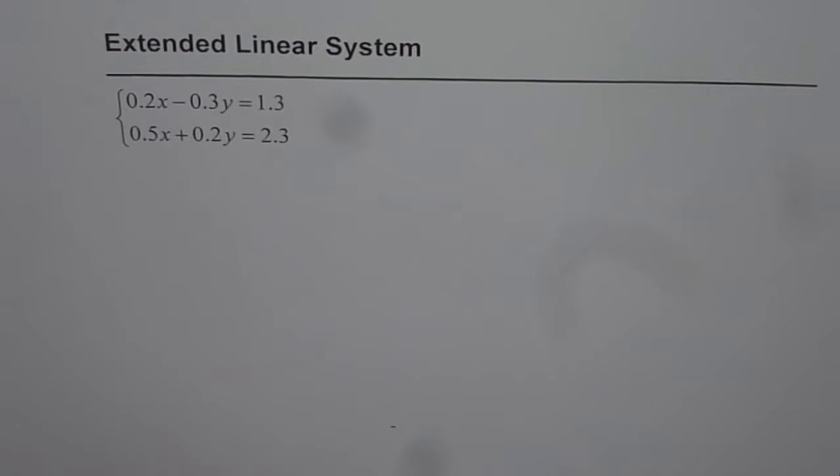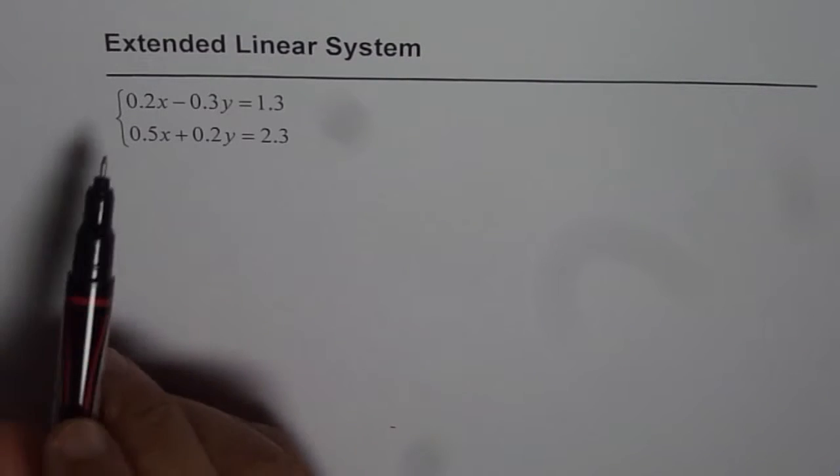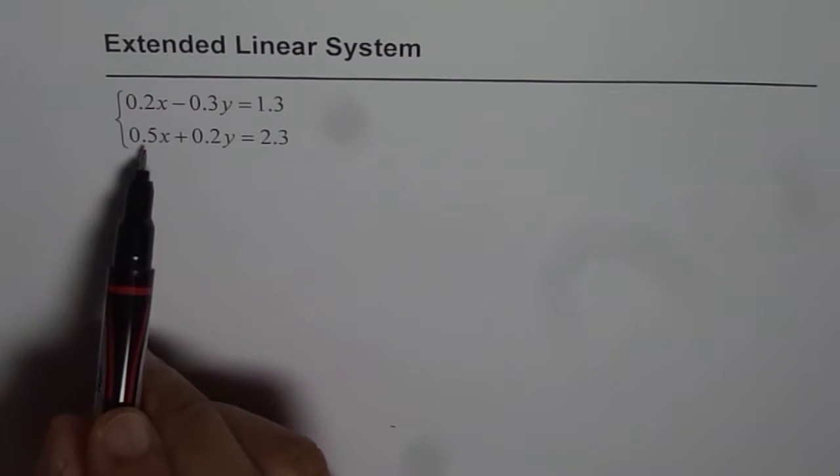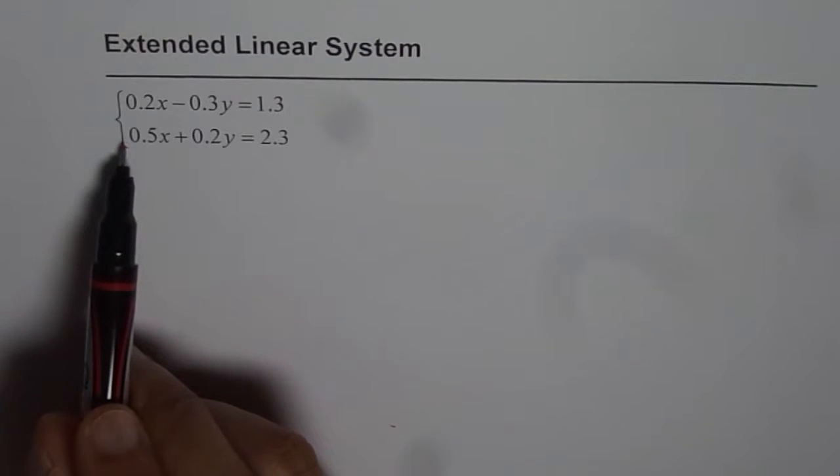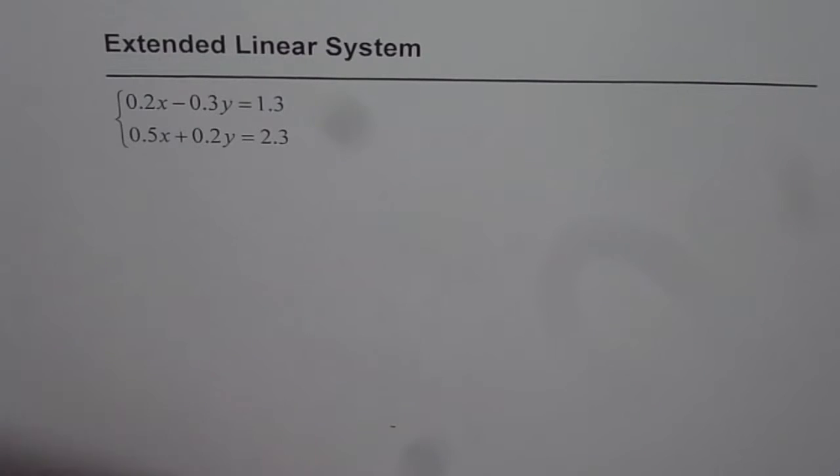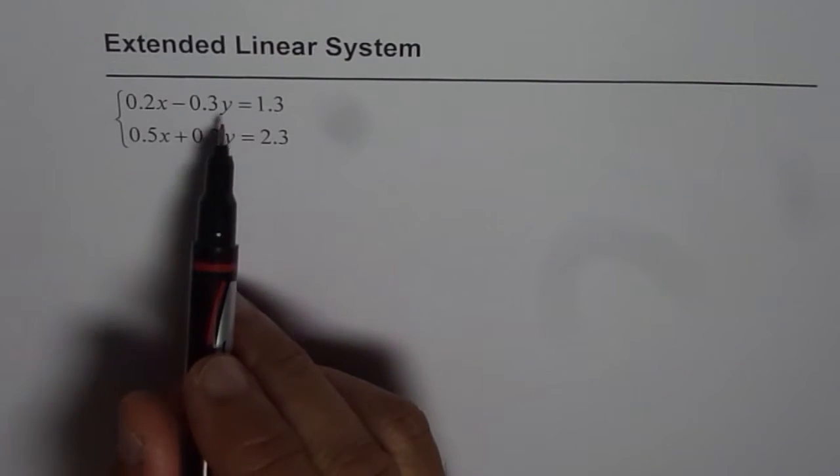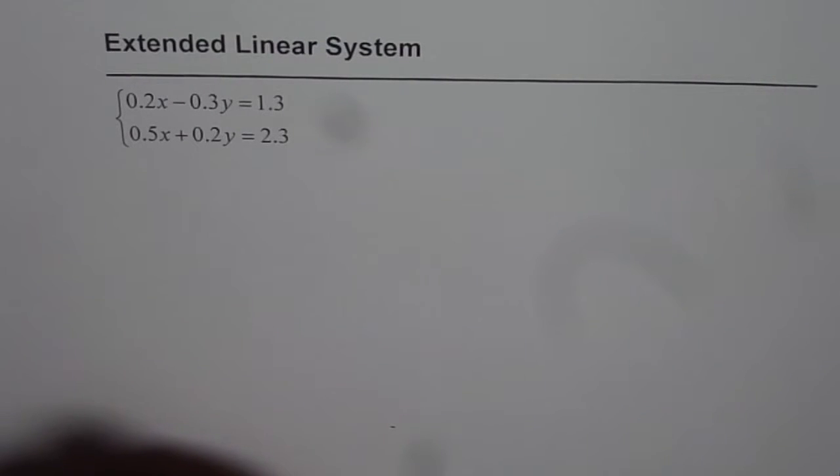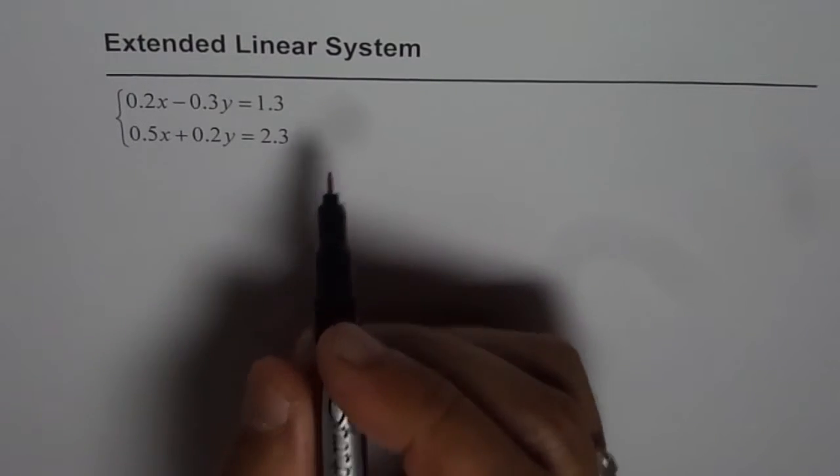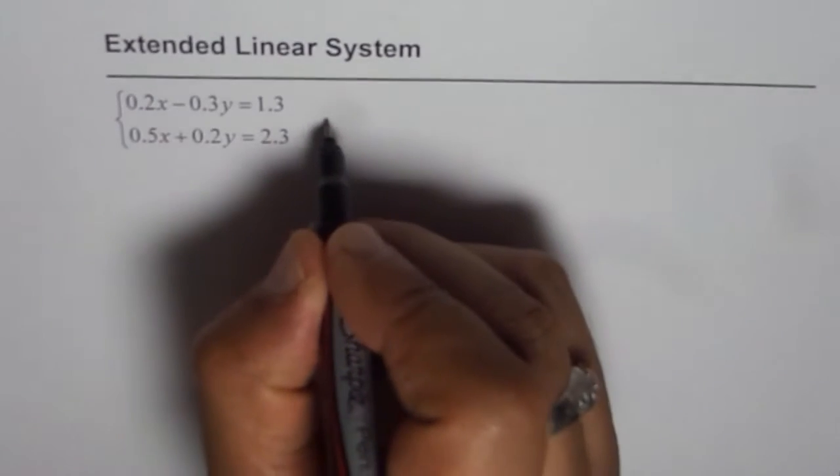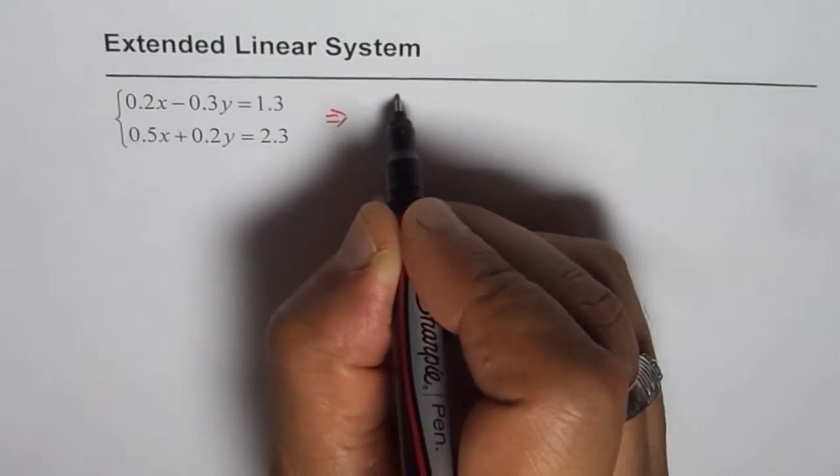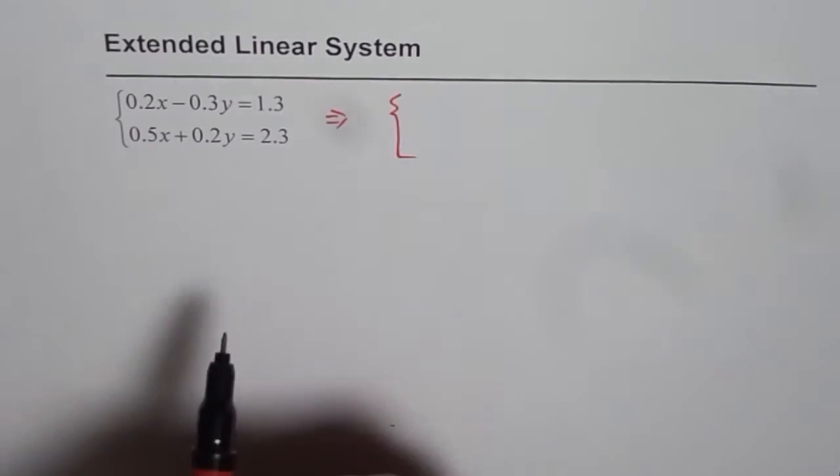Now in this case we can follow the method of elimination, multiplying the first one by 0.5 and the second one by 0.2 and the difference of these two could give us the value of y. That is one way of doing it. The other way is we can get rid of decimals. In that case we will be working with whole numbers. So I will recommend that in such a case we can write this set of equations as equations without decimals.